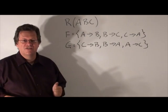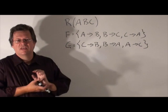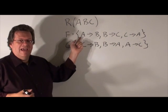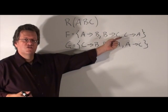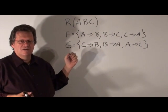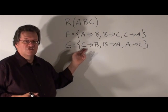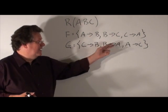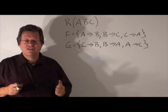Here I have a relation R with three attributes: A, B, C. I have one set of functional dependencies F: A→B, B→C, C→A. And I have another set of functional dependencies G: C→B, B→A, A→C.